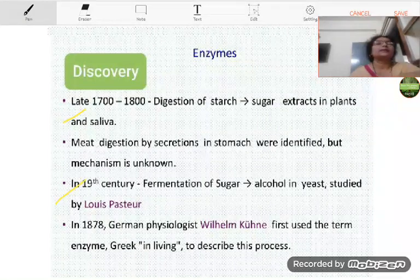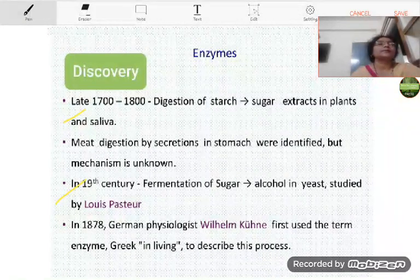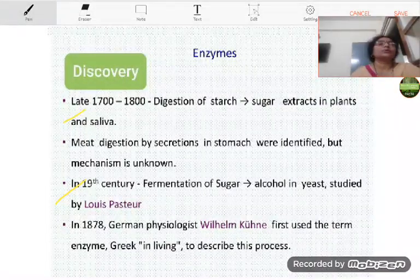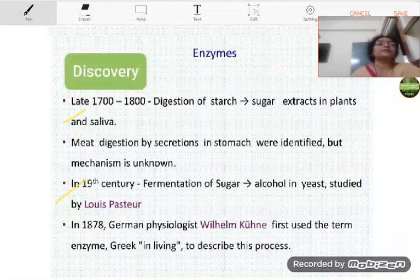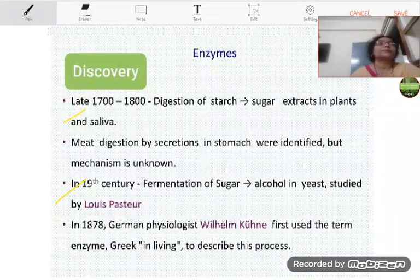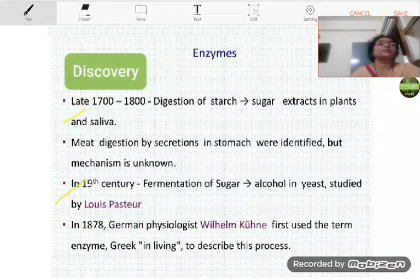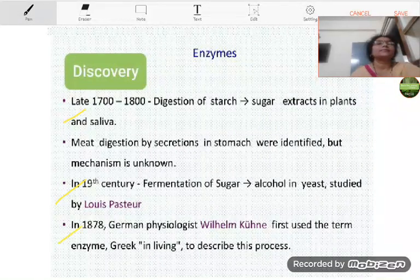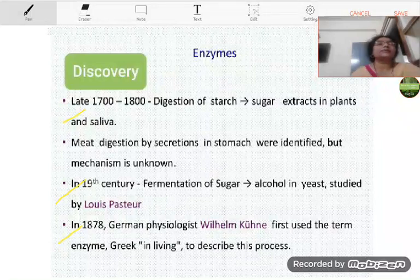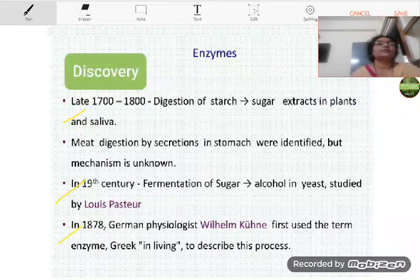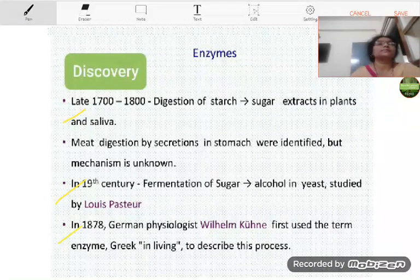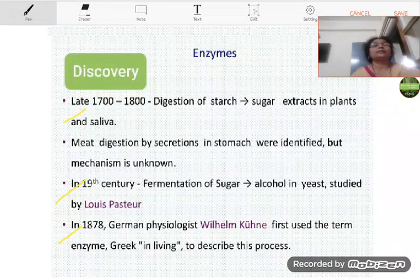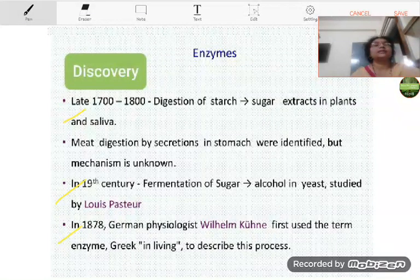Then, in 19th century, Louis Pasteur concluded that fermentation of sugar into alcohol in the presence of yeast cells took place in the presence of some ferments. And in 1878, German physiologist F. W. Kuhne first used the term enzyme. In Greek, the term enzyme means in leaving.